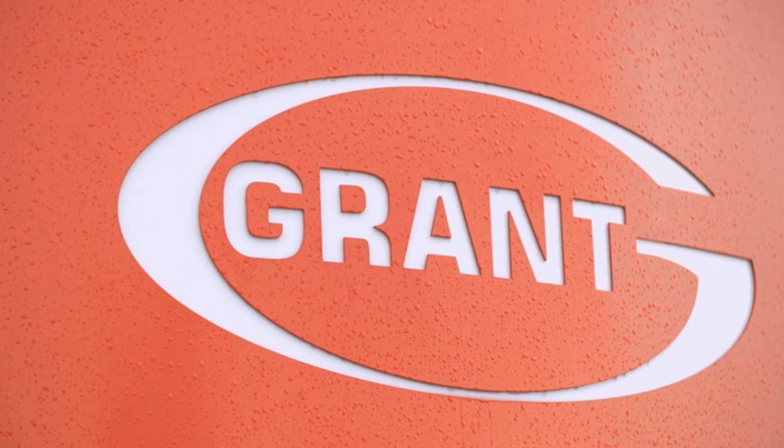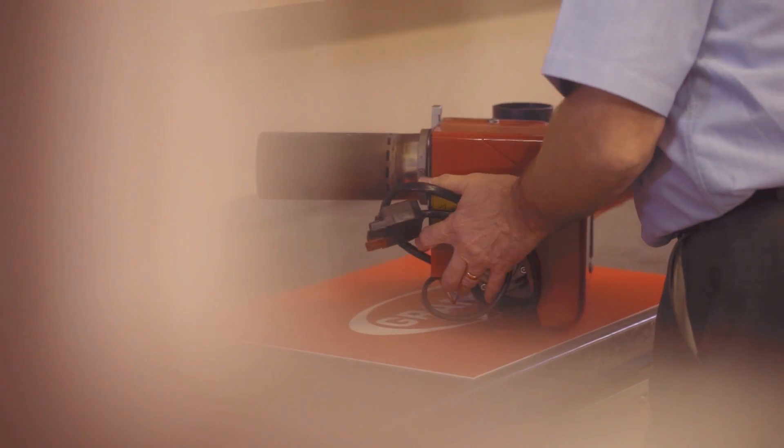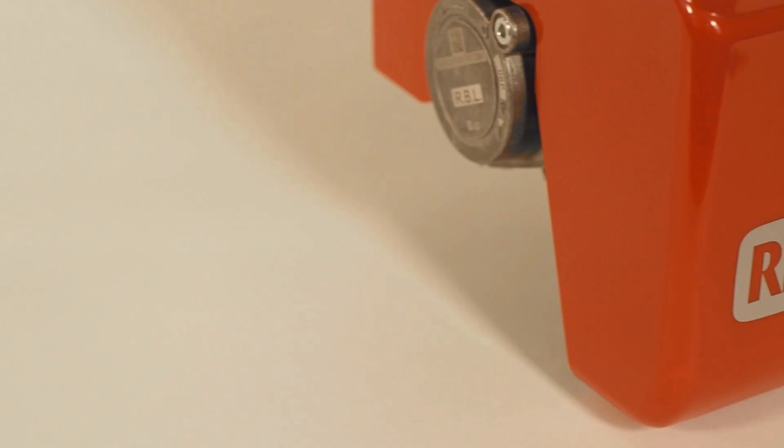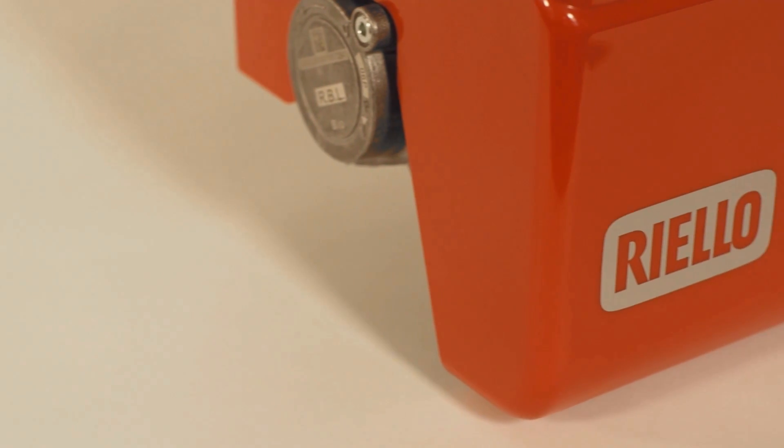This is a brief introduction to the Riello RDB BG Blue Flame Pressure Jet Burner used across the Grant Vortex Blue range of high efficiency condensing oil boilers.